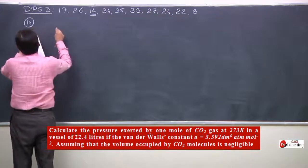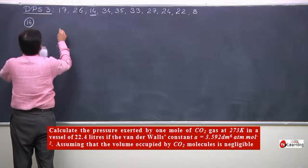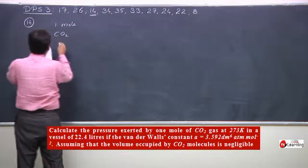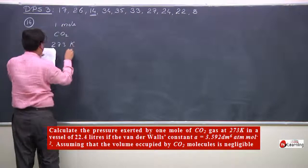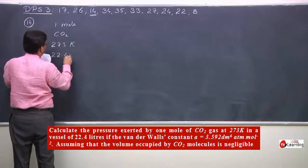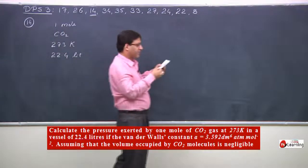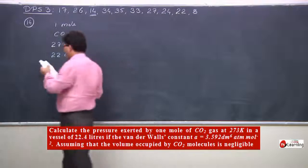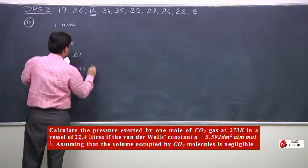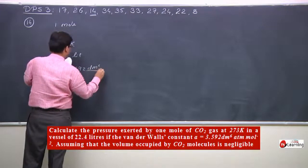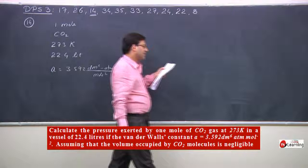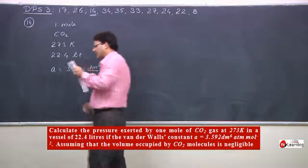For the 10th problem, calculate the pressure exerted by 1 mole of CO2 at 273 Kelvin in a vessel of 22.4 liters, if Van der Waals constant A is 3.592 dm^6 atmosphere per mole square. Assuming the volume occupied by CO2 molecule to be negligible.